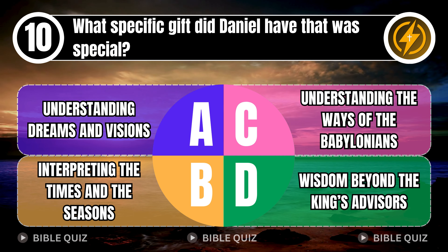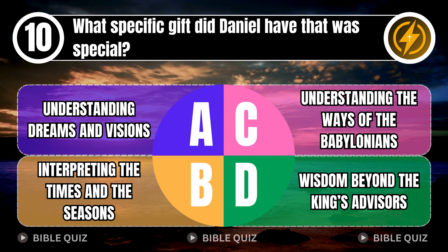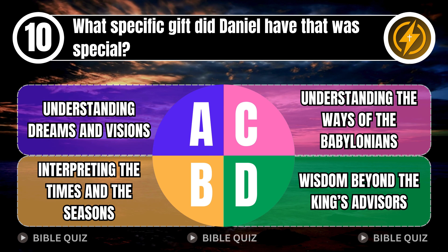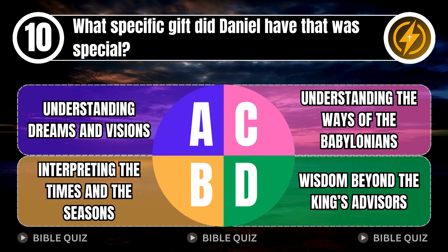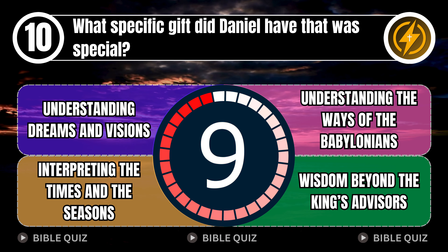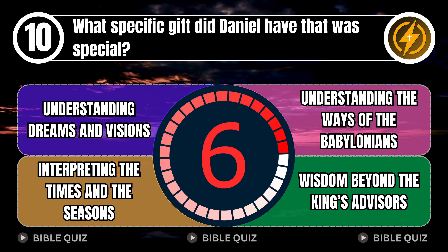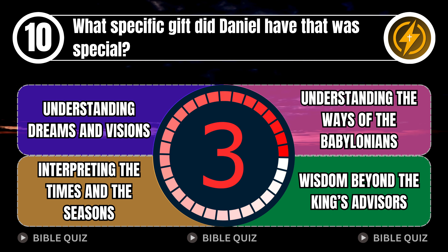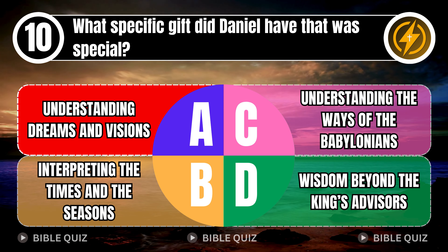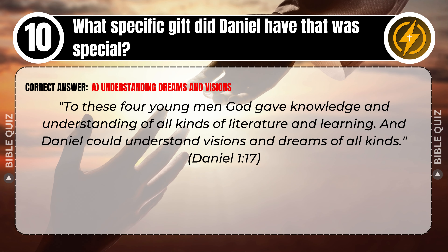Question 10: What specific gift did Daniel have that was special? A. Understanding dreams and visions. B. Interpreting the times and the seasons. C. Understanding the ways of the Babylonians. D. Wisdom beyond the king's advisors. Correct answer: A. Understanding dreams and visions. To these four young men God gave knowledge and understanding of all kinds of literature and learning. And Daniel could understand visions and dreams of all kinds. Daniel 1 verse 17.